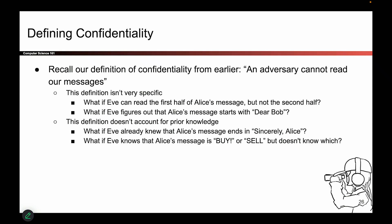There is one minor problem with our definitions. Our definition of security is actually kind of vague. Our definition of confidentiality is that an adversary cannot read our messages, but this already opens us up to a lot of edge cases. For example, what if Eve can read only half of the message? Does that count as reading your message or not reading your message? What if Eve can figure out the first two words of the message? Does that count as reading the message? It's not so clear.